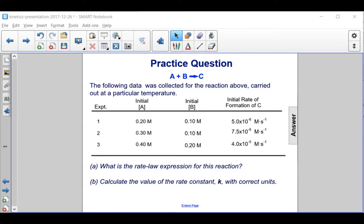Here's a practice question where A plus B produces C. The following data was collected for the reaction above, carried out at a particular temperature. We have three experiments with an initial concentration of both A and B, and the initial rate of formation of the product C.